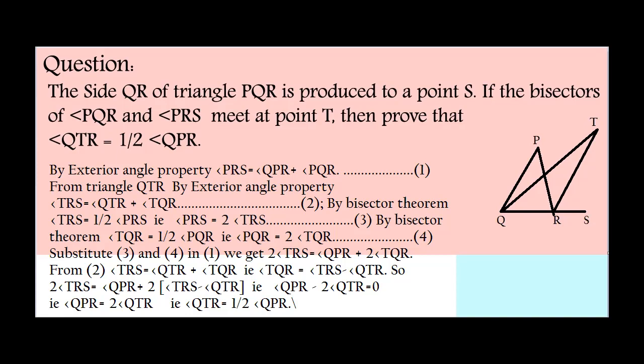By bisector theorem again, angle TQR equals half of angle PQR. That is, angle PQR equals 2 angle TQR. Name it as equation number 4.